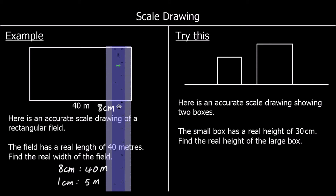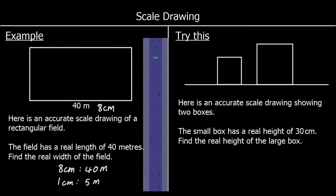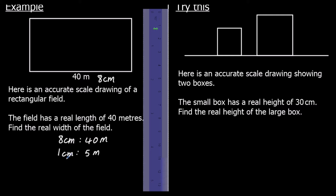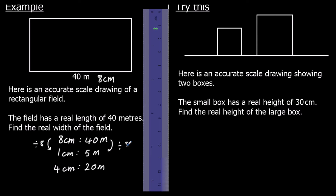If we measure the width of the rectangle on the drawing, it's 4 cm. So if we have 4 cm on the drawing, and every 1 cm is 5 meters, then 4 times 5 is 20 meters. So we divided by 8 and then multiplied by 4.